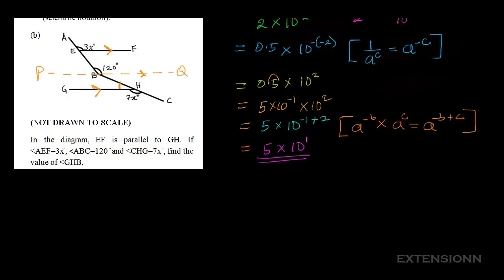Here we have one part of the angle, and here we have the other part. So line PQ is dividing angle 120° into two angles — the blue one and the red one. The question is: how do we find the value of these angles? Let's solve that.